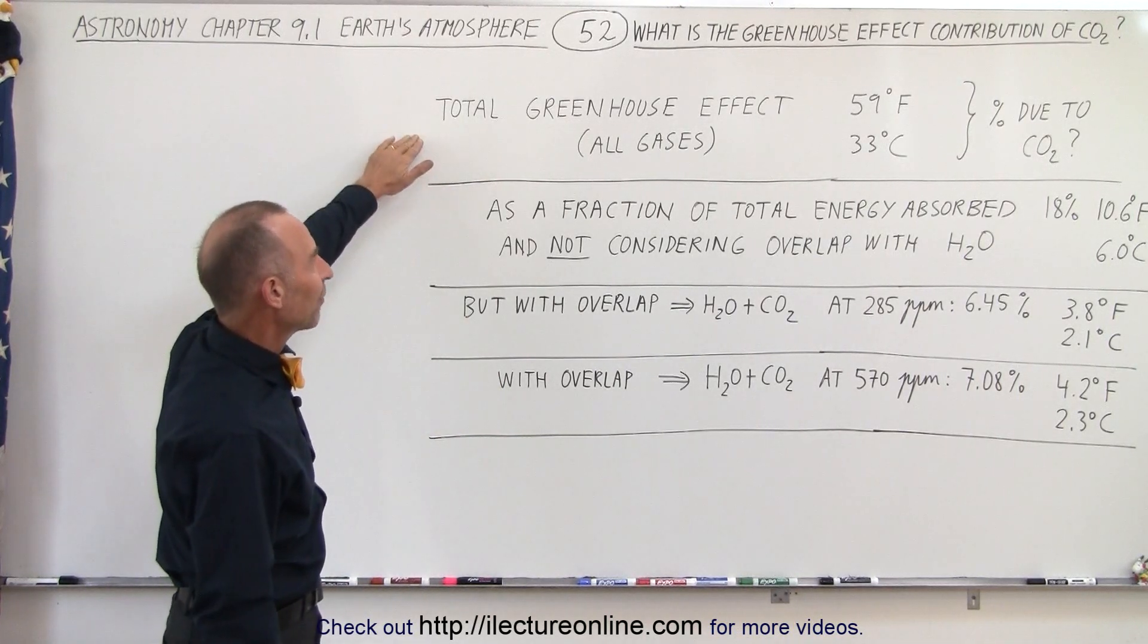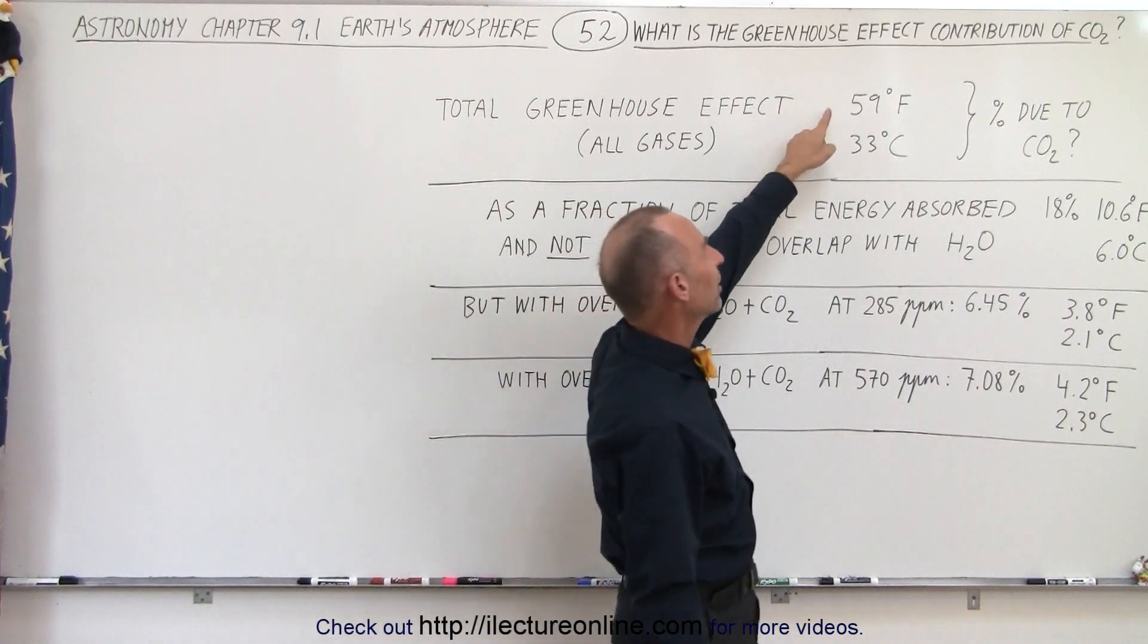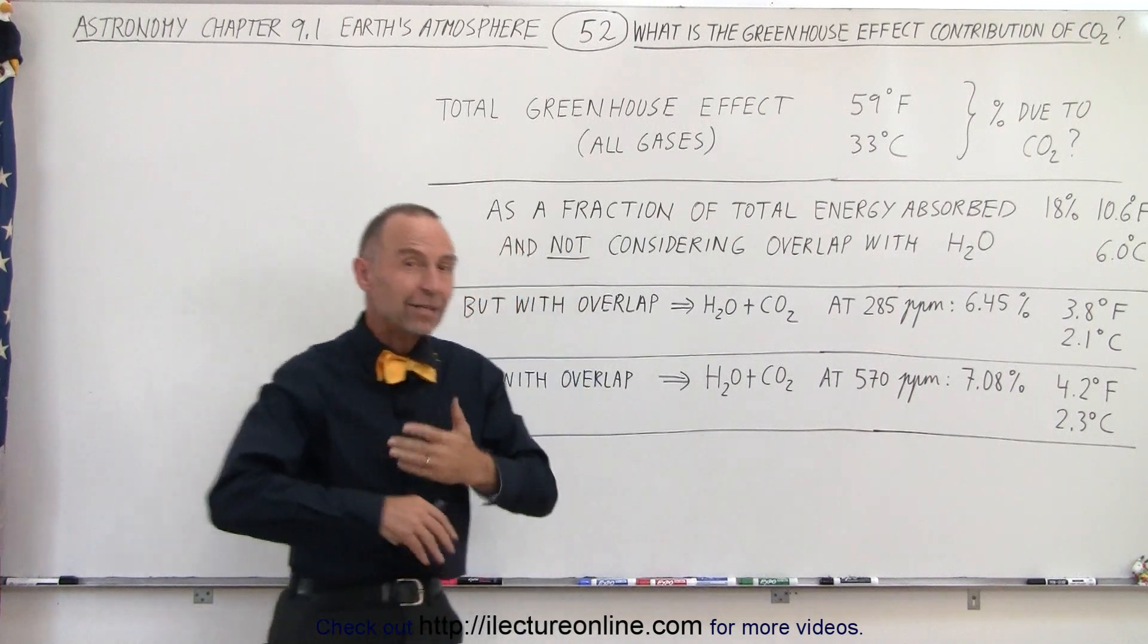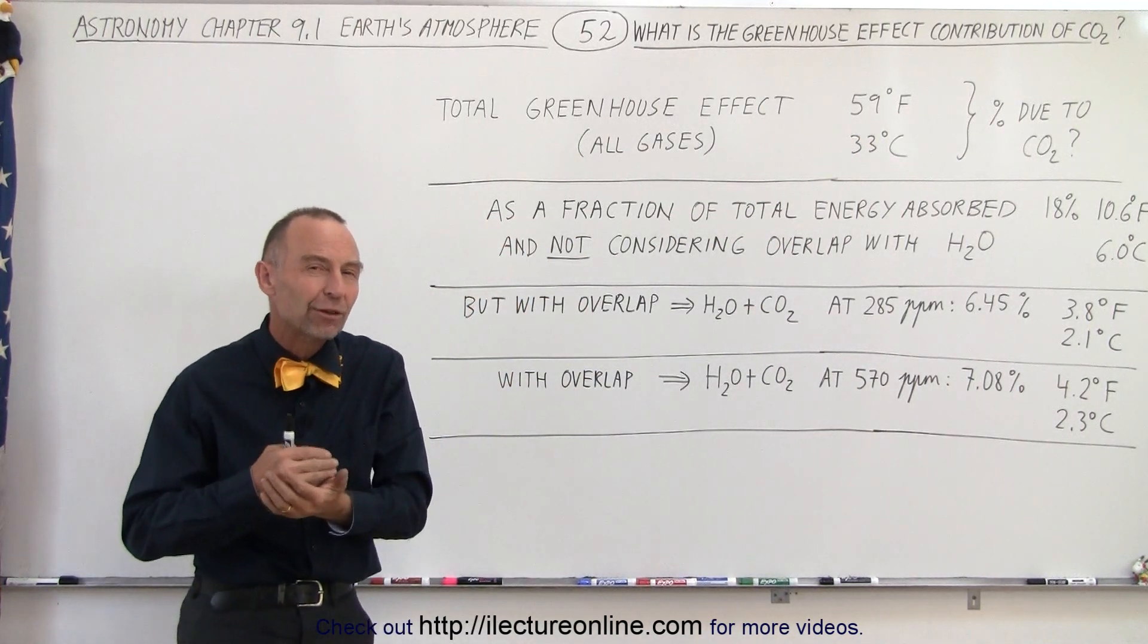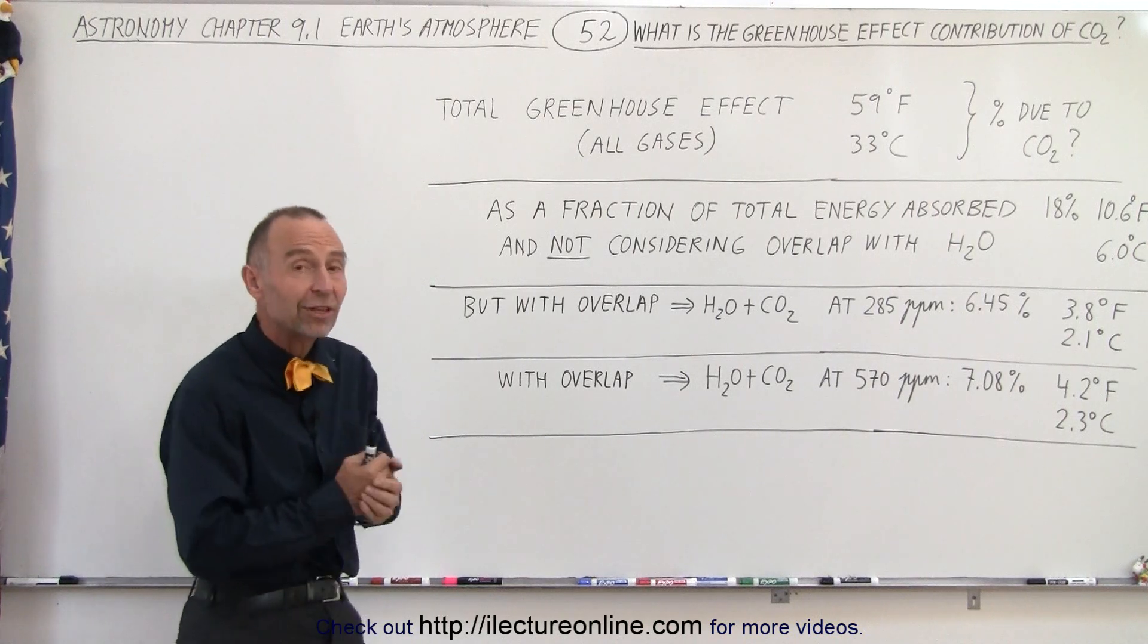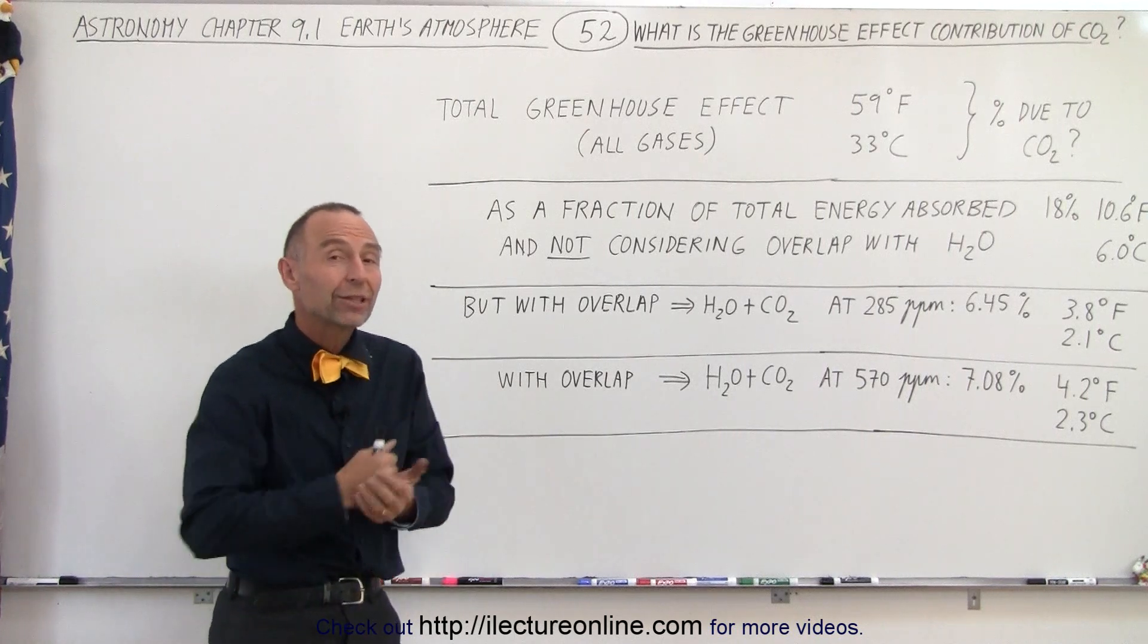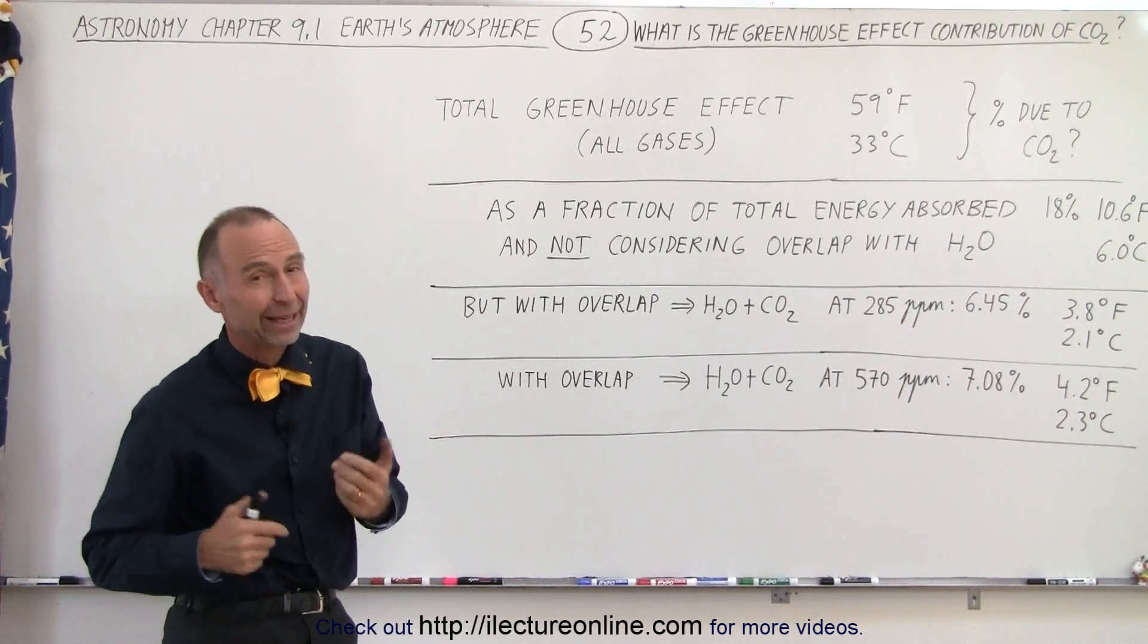So the total greenhouse effect all gases combined is about 59 degrees Fahrenheit or about 33 degrees centigrade, which means that without any of the greenhouse gases in the atmosphere it would be about 59 degrees Fahrenheit or 33 degrees centigrade cooler on Earth on average as compared to with the greenhouse gases.